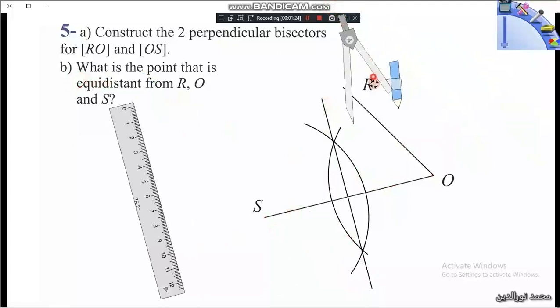Then we draw the perpendicular bisector of RO. First we put the needle on the extremity R and we draw this arc.